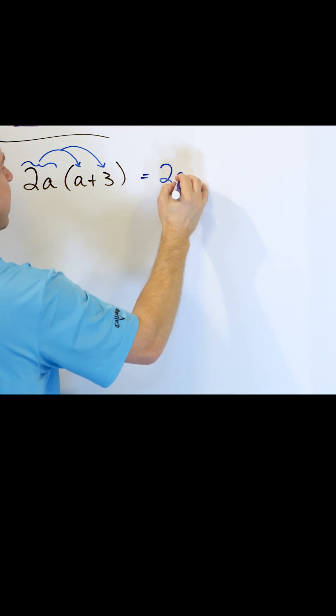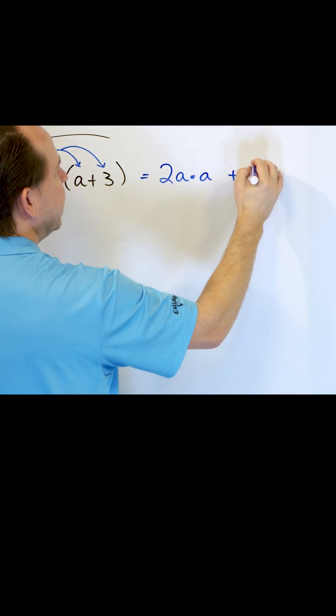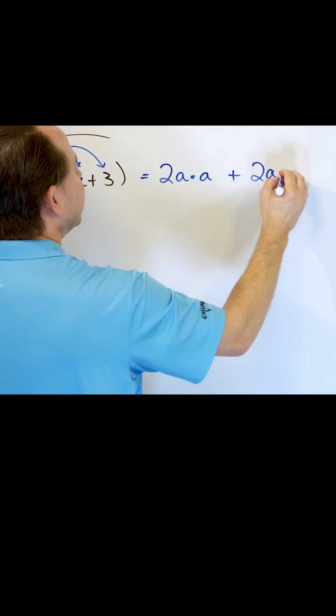So you have 2 times a and it's multiplied times this a and then it's linked with a plus sign, and then the 2a gets multiplied in times the 3. So it's 2a times 3.